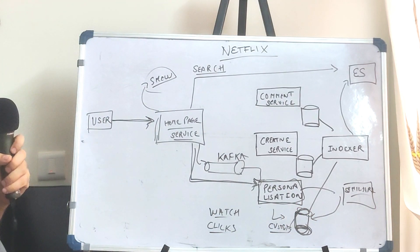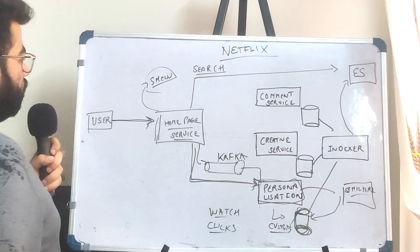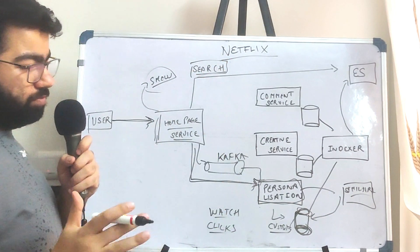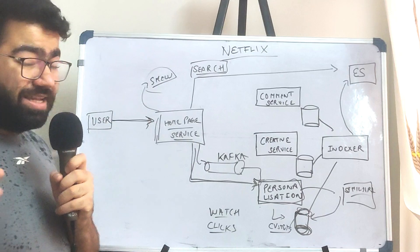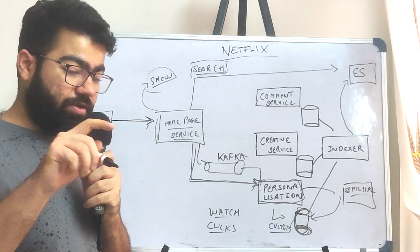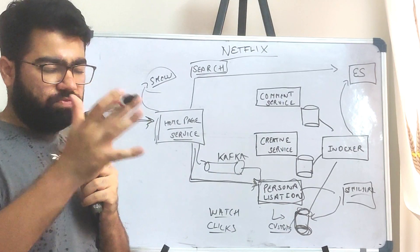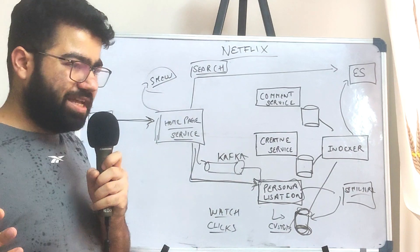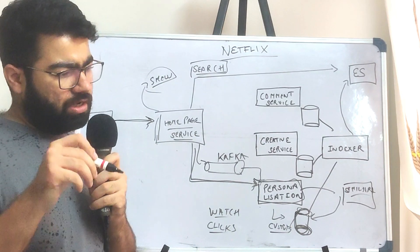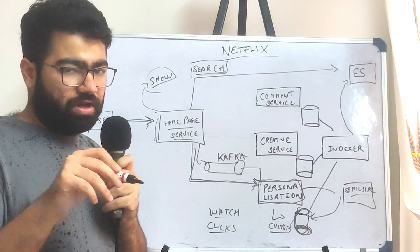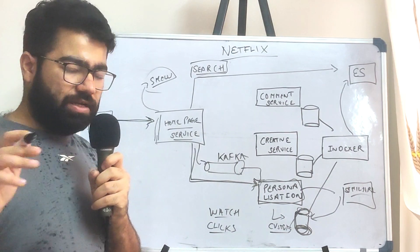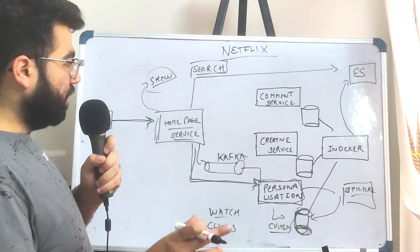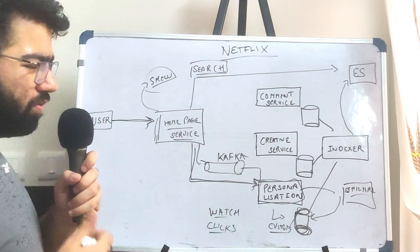The next thing we come to is the search part. When you search a particular show title, you should be given the search results. There is another feature called type-ahead search: as you start typing, for example if you type 'FR', Netflix will automatically show you 'Friends' and other titles which match or start with that.